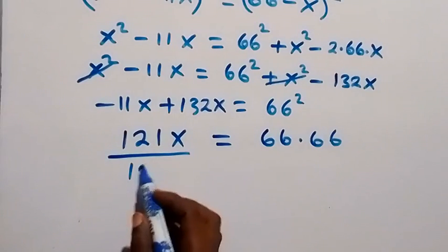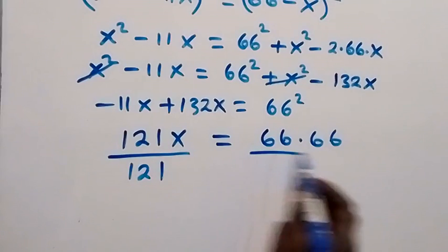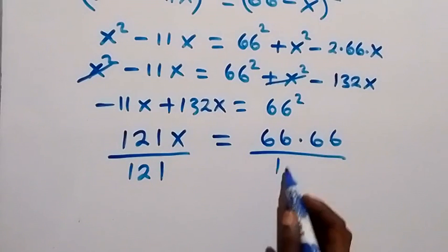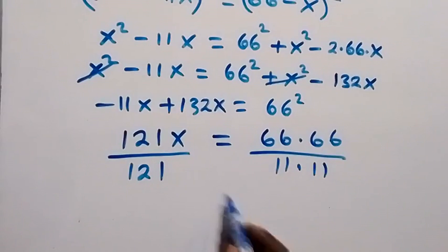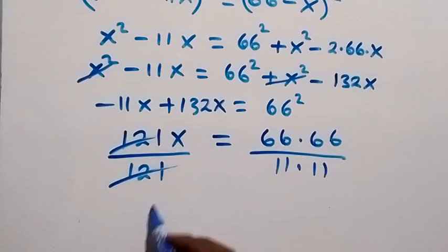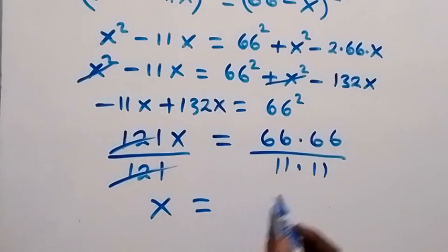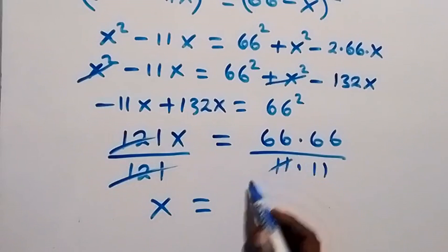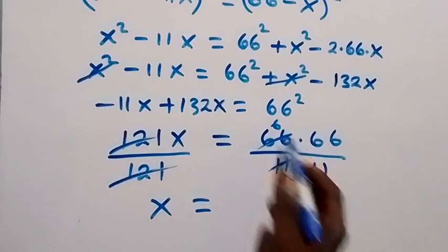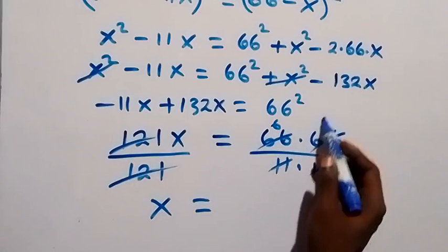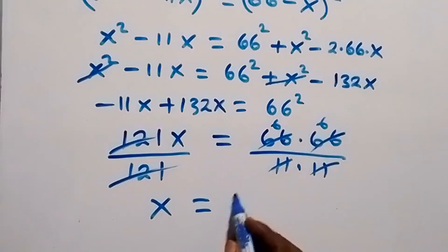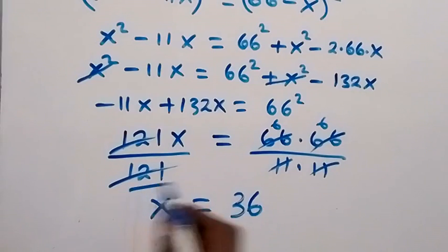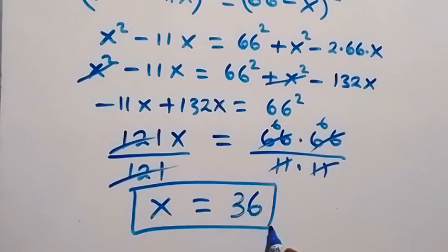We divide both sides by 121. Writing 121 as 11 × 11, one 11 cancels with 66 to leave 6, and the other 11 also cancels to leave 6, so x = 6 × 6 = 36.